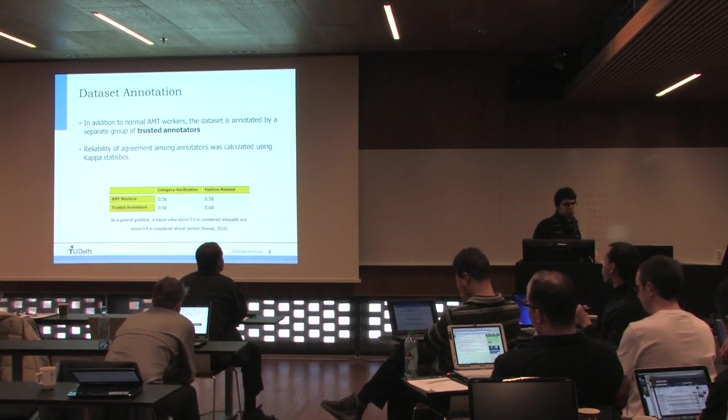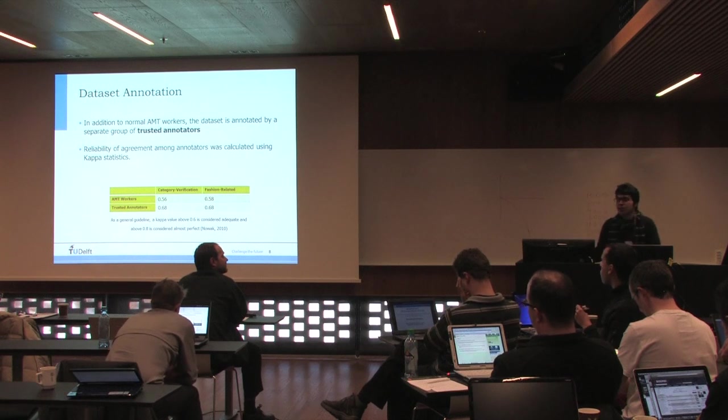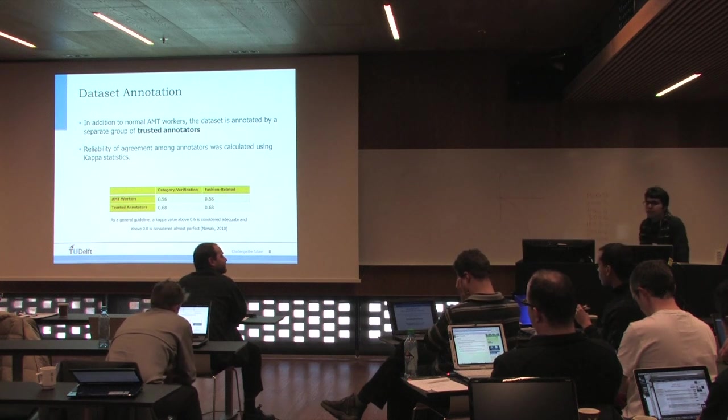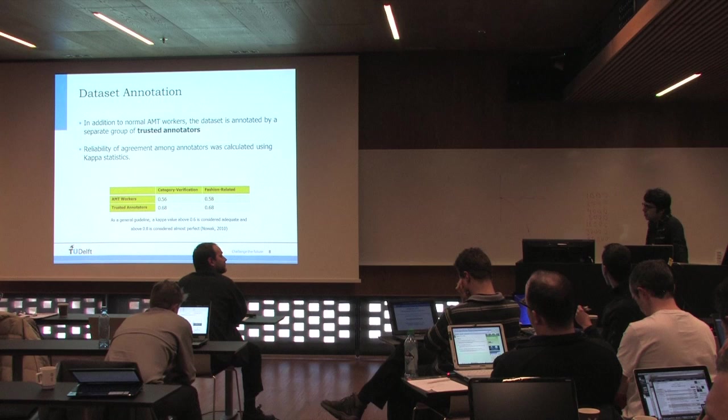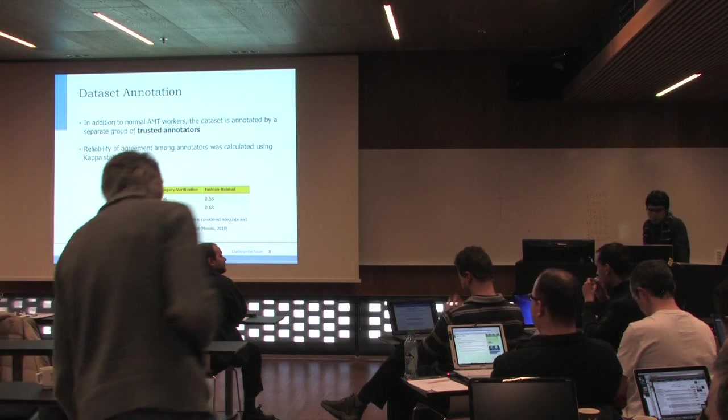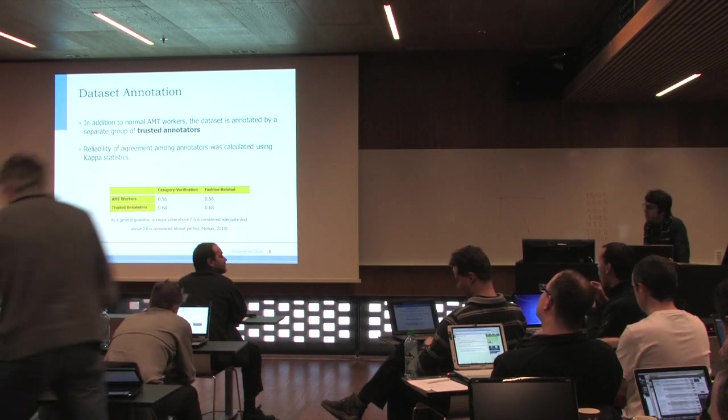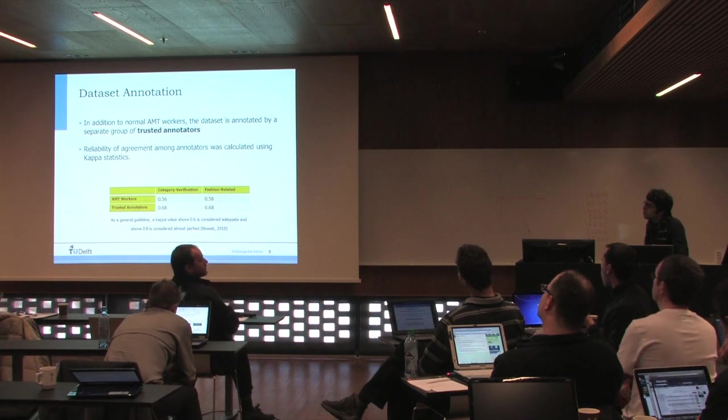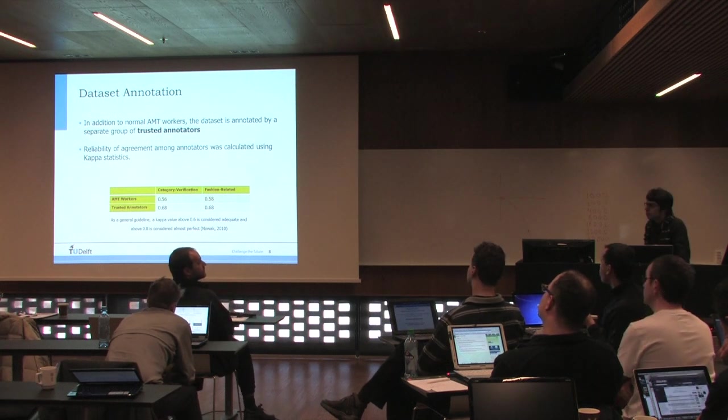This is the inter-annotator agreement, kappa statistic, which measured the agreement. For trusted annotators, we had better agreement. But in both cases, the agreement was more than 0.6, which tends to be adequate agreement for crowdsourcing platforms.